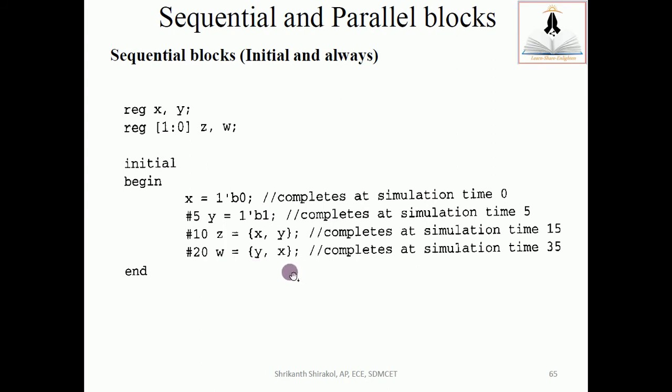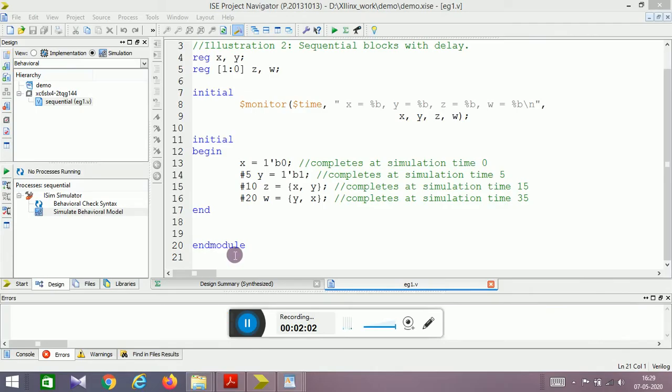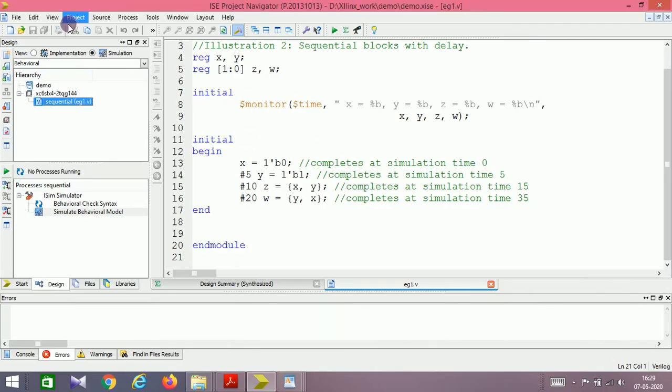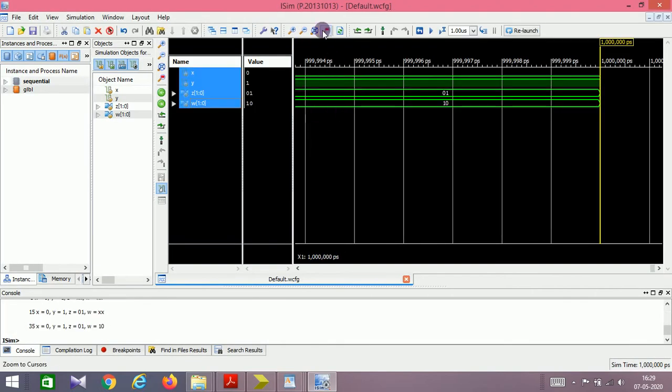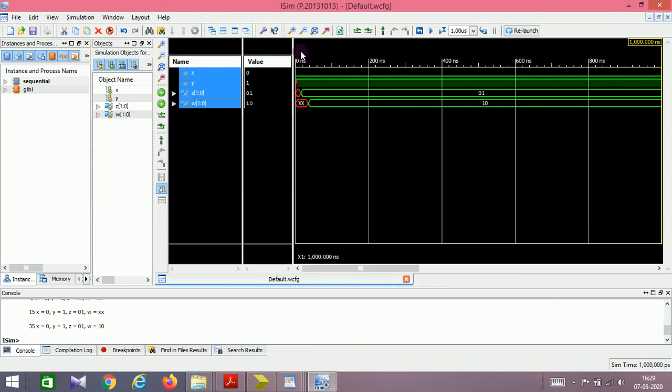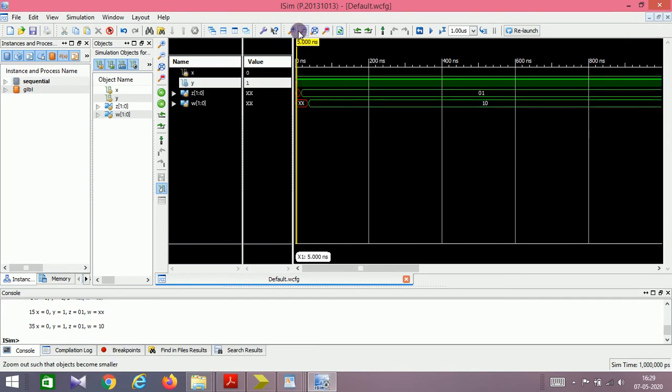Let us have a check of this code in the Xilinx environment. I have taken the same code. Let me just simply simulate it. You have a checkpoint at hash 5, that is 5 time units, 5 plus 10, 15 time units, and 15 plus 20, 35 time units. At these time units, Y, Z, and W get updated. Let us have a check on it.